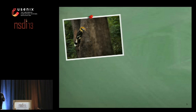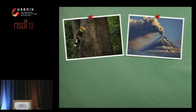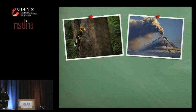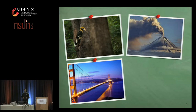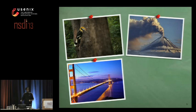The first well-known deployment of a sensor network was to monitor a habitat of birds. Today, they can also be used to monitor even the other extreme — active volcanoes. There was also a deployment on the Golden Gate Bridge to monitor its structural health.